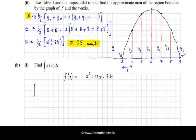So let's do that now. So we're going to integrate from 3 to 9, minus x squared plus 12x minus 27, with respect to x. So that will give us minus x cubed over 3, plus 12x squared over 2, minus 27x. And then we sub in our limits, from 3 to 9.